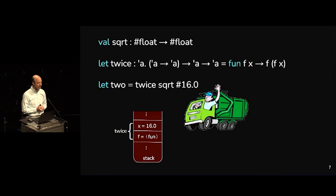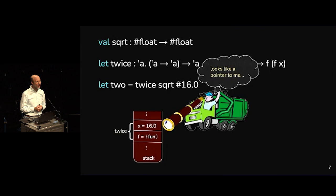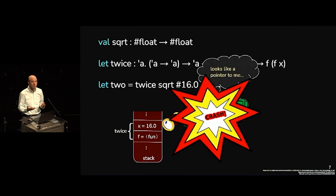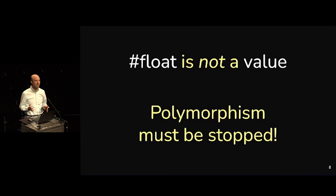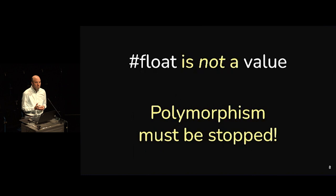Our friendly garbage collector comes along and tries to figure out if it's time to collect some garbage. It looks at that 16 sitting on the stack — the bottom bit of that 16 is going to be zero, so it kind of looks like a pointer. The garbage collector follows the pointer and tries to see what memory it points to — and the garbage collector crashes. This is really bad. Throughout OCaml we have a uniform representation where every value is either a pointer ending in zero or an int with that bottom bit set to one, so the GC knows not to try to collect it. An unboxed float doesn't meet this specification, so polymorphism over unboxed floats must be stopped.